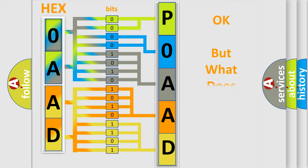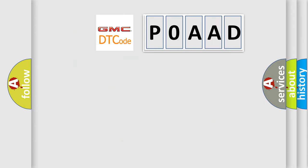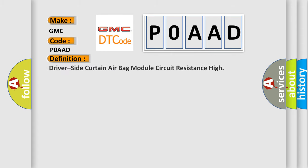The number itself does not make sense to us if we cannot assign information about what it actually expresses. So, what does the diagnostic trouble code P0AAD interpret specifically for GMC car manufacturers? The basic definition is: Driver side curtain air bag module circuit resistance high.